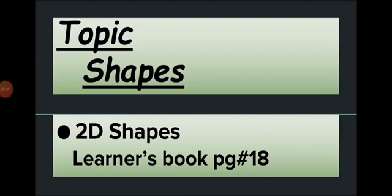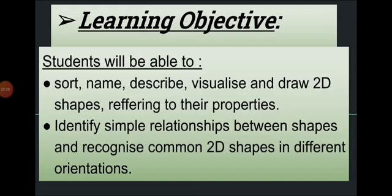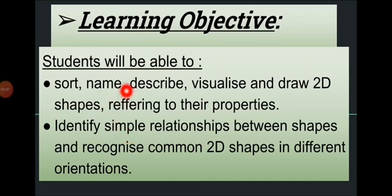Assalamu alaikum dear students, good morning. Today we are starting a new topic — shapes — and the subtopic is 2D shapes or two-dimensional shapes. Learners book page number 18, so take out your learners book. The learning objectives are: to sort, name, describe, visualize, and draw 2D shapes referring to their properties; identify simple relationships between shapes; and recognize common 2D shapes in different orientations.